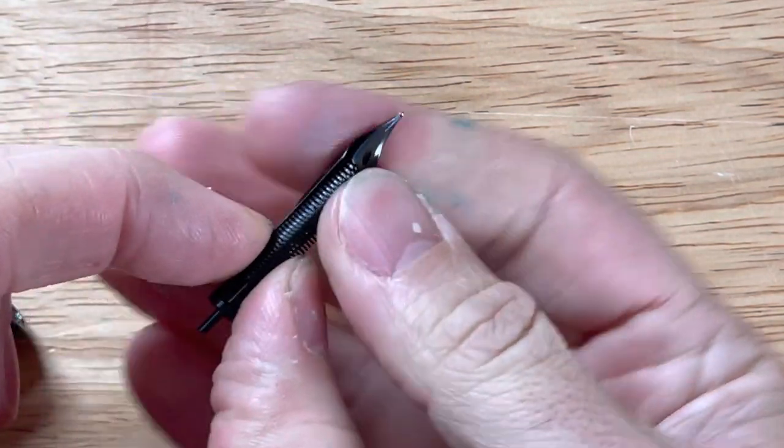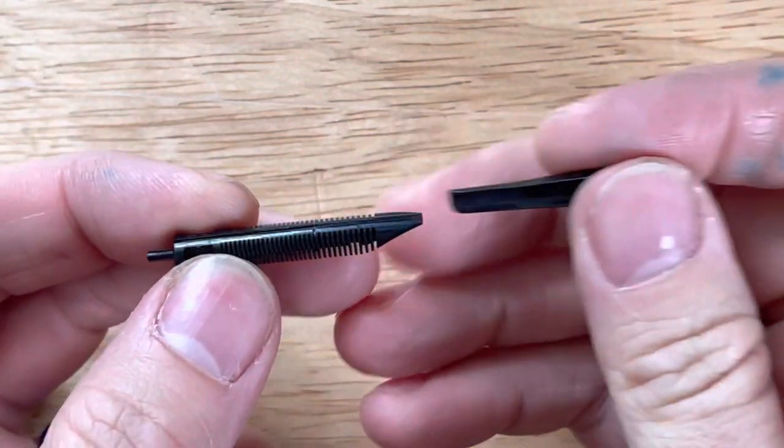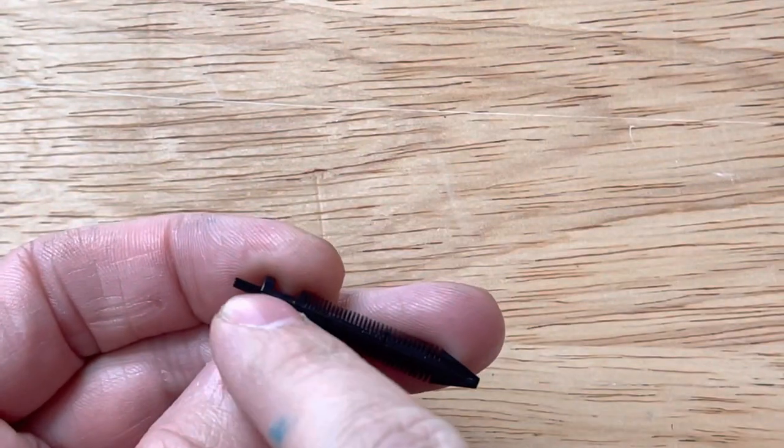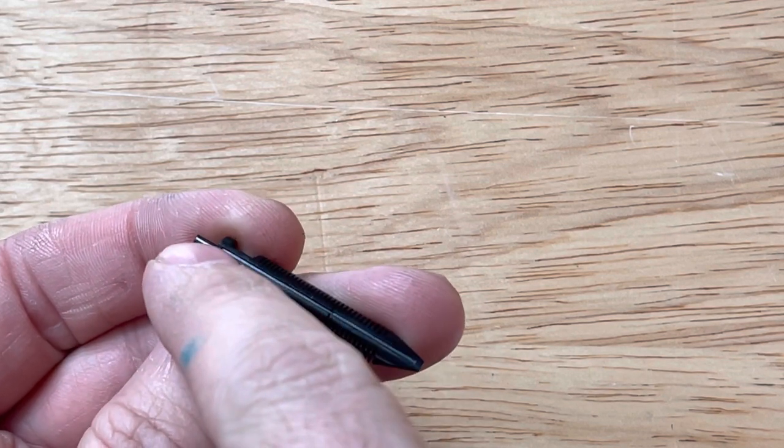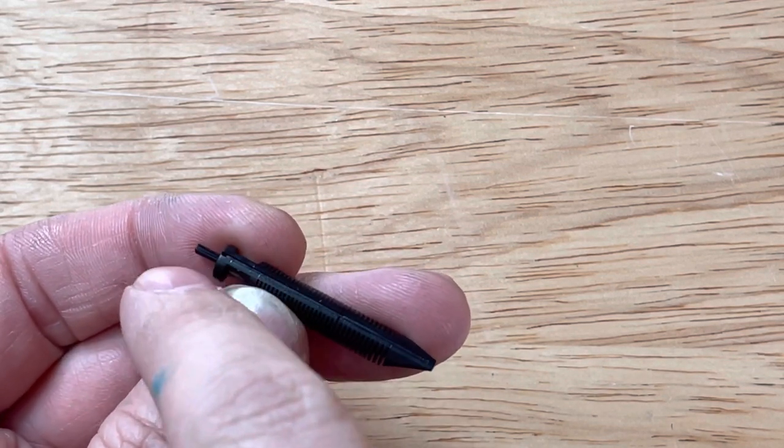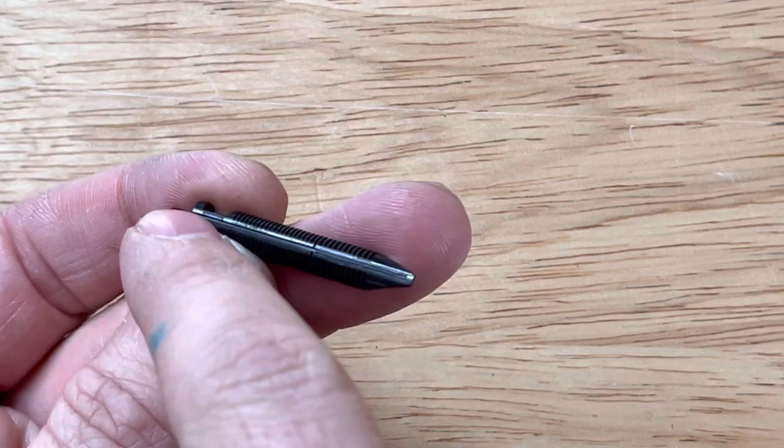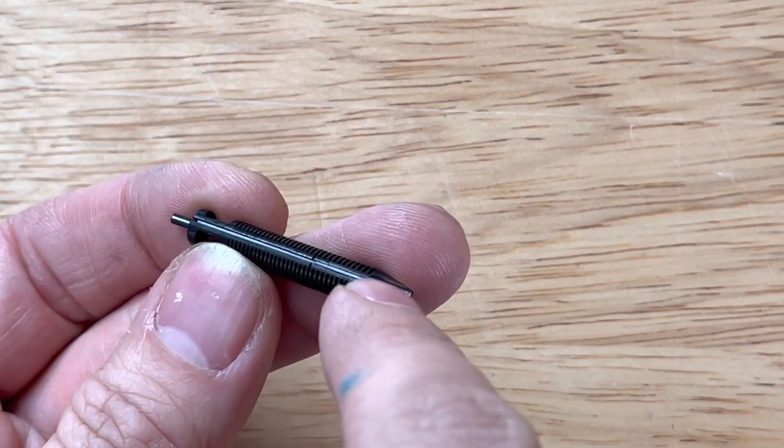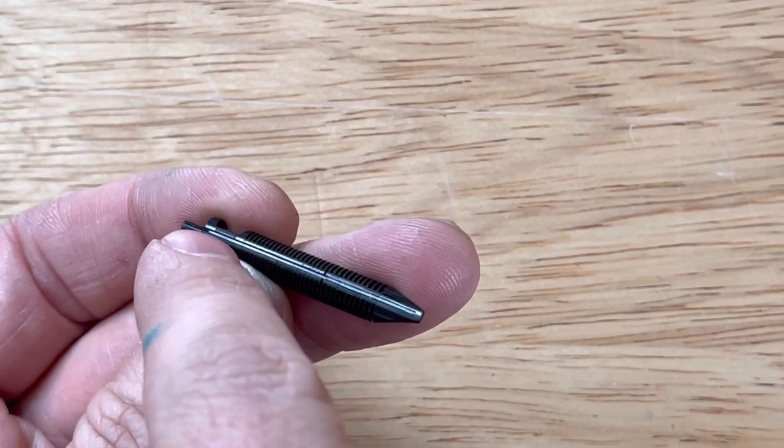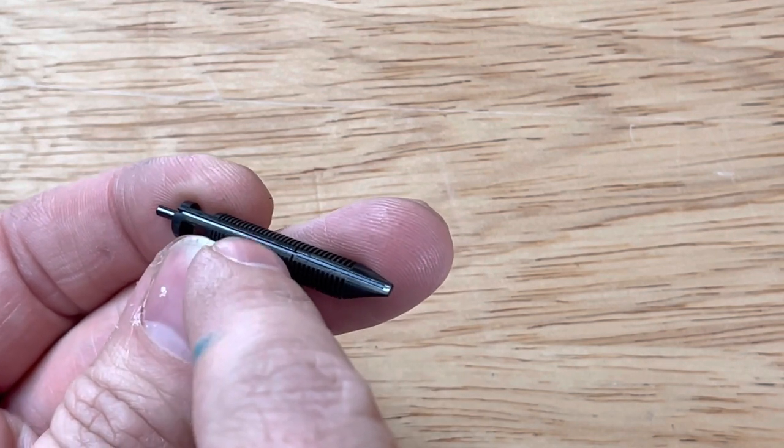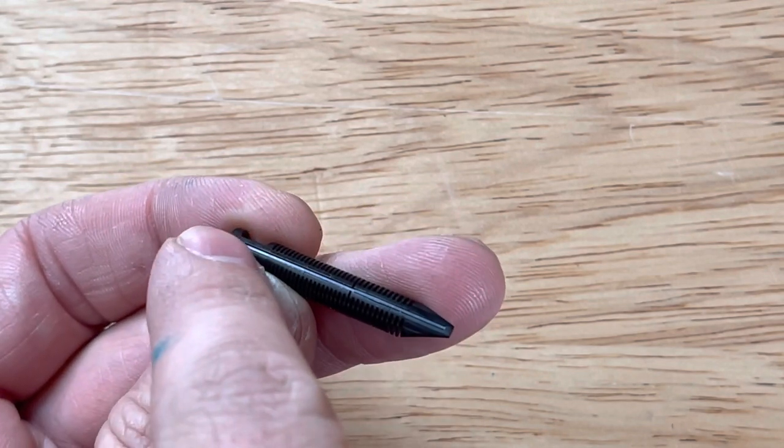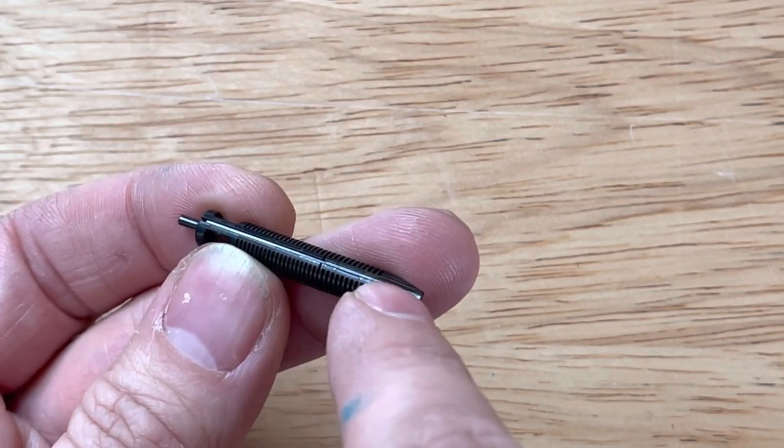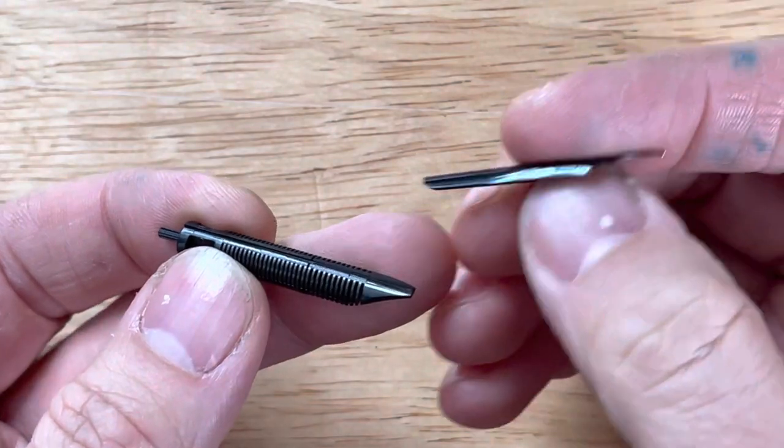When I pull this nib and feed out of here, you can kind of see how the ink might flow, right? So this part right here is connected to the converter, the cartridge or whatever other part, the ink chamber, depending on the pen. You can see there's these two little channels right here. Sometimes it's one channel, sometimes two or more, depends on the different designer. But these channels right here, that's how the ink actually flows from the ink chamber all the way to the feed on the top.